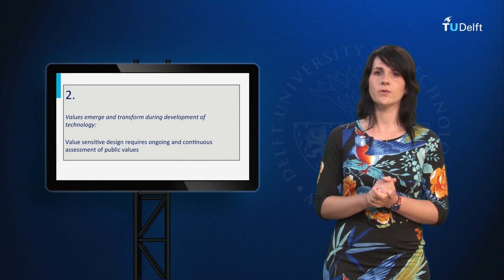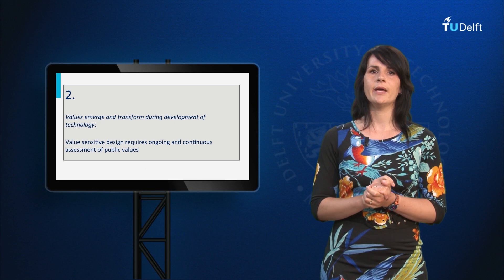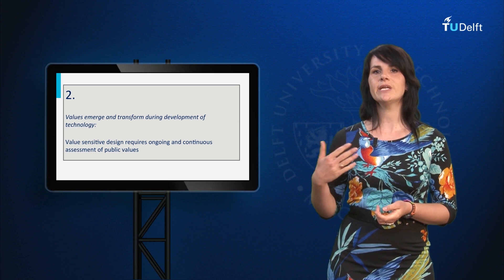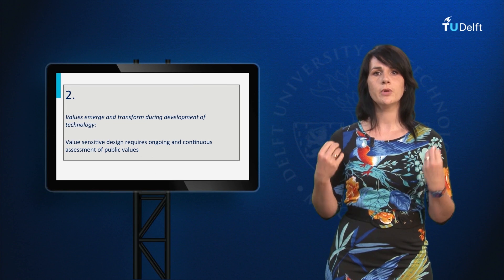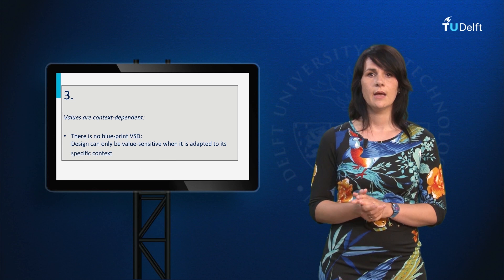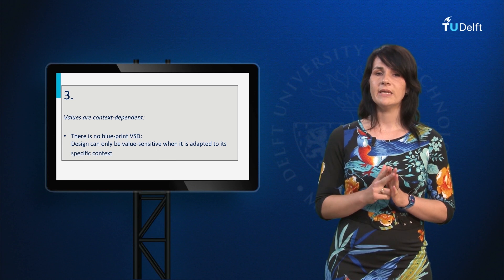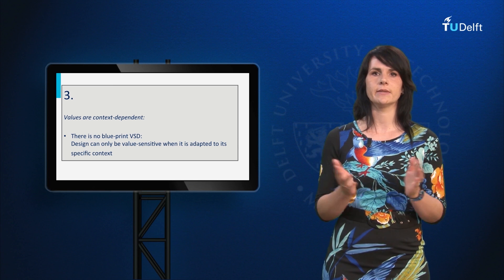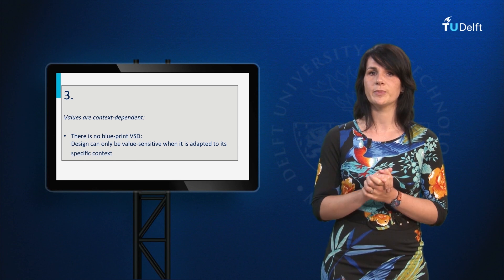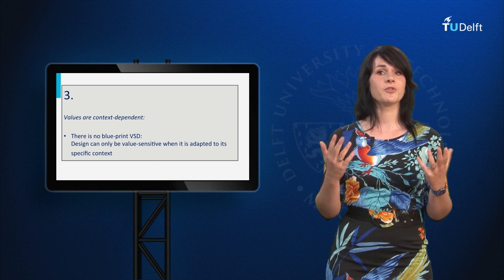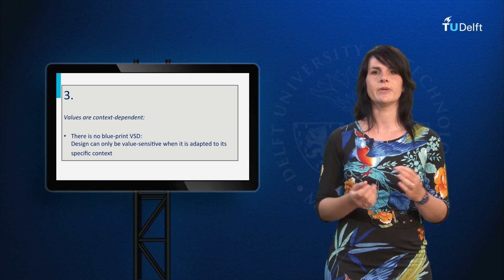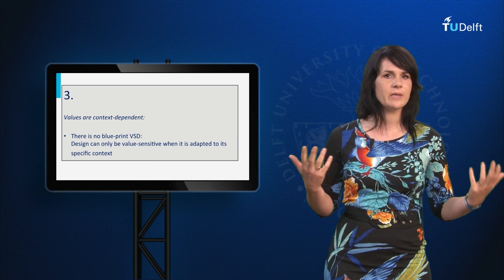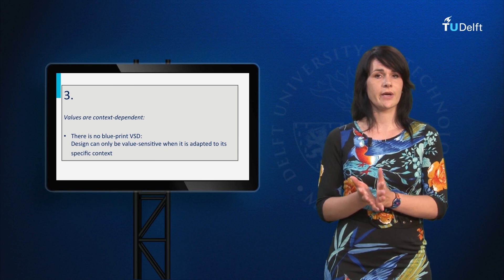So if you want to design for values, this means firstly that you cannot rely on only an ex ante assessment of relevant values; rather it requires ongoing and continuous assessment of public values in order to make sure that emergent values can be accounted for. Secondly, a design can only be value-sensitive when it is adapted to the context at hand — in terms of space, time, culture, etc. There is no such thing as a blueprint value-sensitive design of a particular technology. If you want to design for values, you have to go out and talk to people in order to find out what the technology means to them, how it affects them, what is at stake for them, how they want to be involved or not. So it requires the use of social science methods.